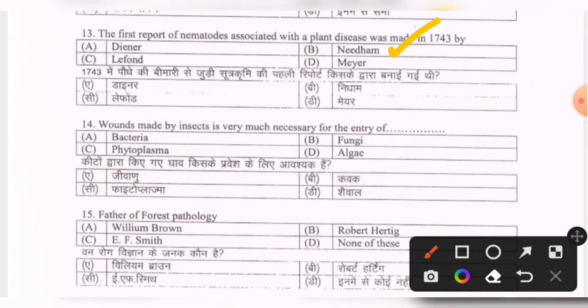Next question: wounds made by insects are very much necessary for the entry of — options are bacteria, fungi, phytoplasma, algae. The correct option is C — phytoplasma.